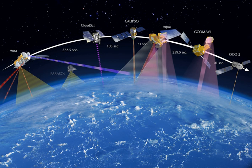A weather satellite is a type of satellite that is primarily used to monitor the weather and climate of the Earth. These meteorological satellites, however, see more than clouds and cloud systems. City lights, fires, effects of pollution, auroras, sand and dust storms, snow cover, ice mapping, boundaries of ocean currents, energy flows, etc., are other types of environmental information collected using weather satellites. Weather satellite images helped in monitoring the volcanic ash cloud from Mount St. Helens and activity from other volcanoes such as Mount Etna.